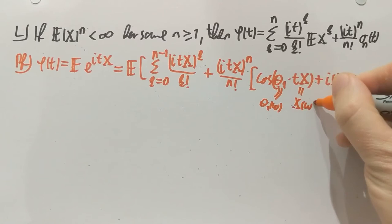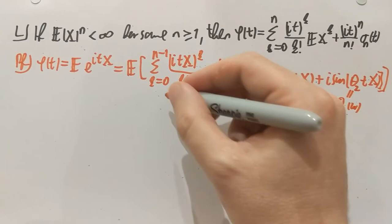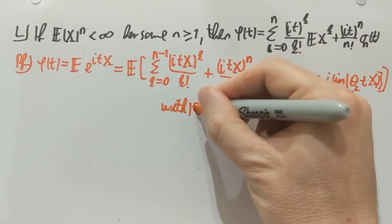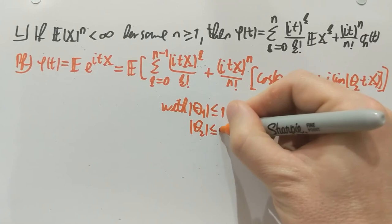But what we know is still part of the complex theorem is that the mod of theta one is at most one. And the mod of theta two is at most one. That's the complex theorem.